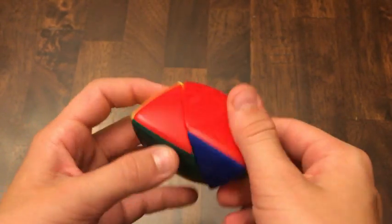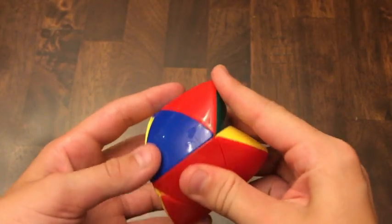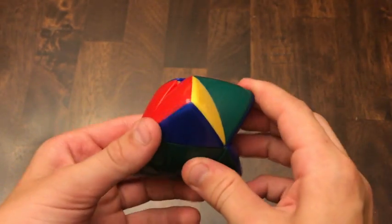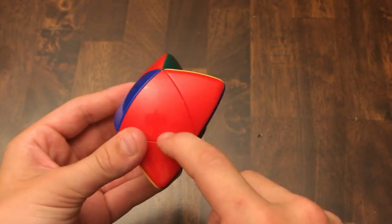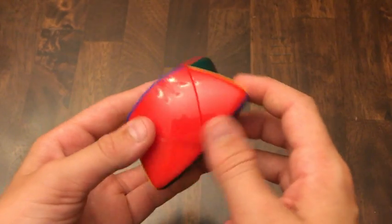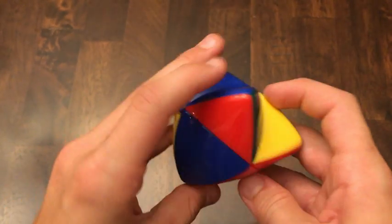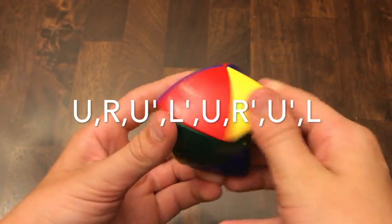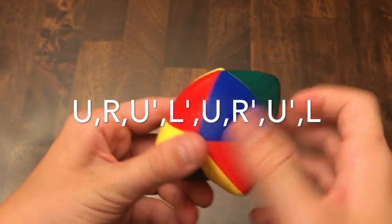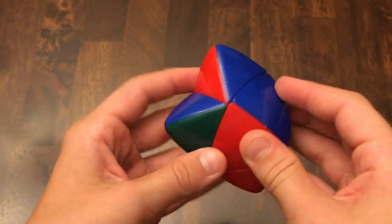Okay. So now we want to look around the puzzle for pieces that are in the correct place. So we have this right here. And what we want to do is hold the correct one in the front and use the permutation algorithm. Do u, r, u prime, l prime, u, r prime, u prime, l. Okay.